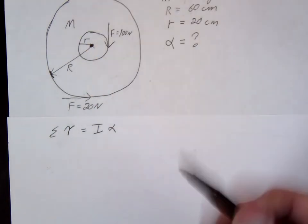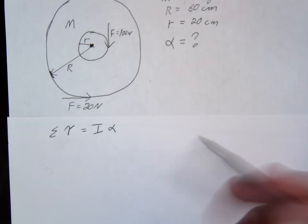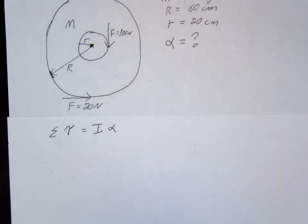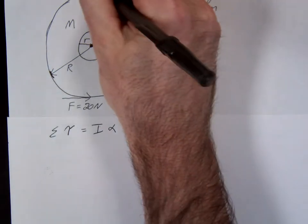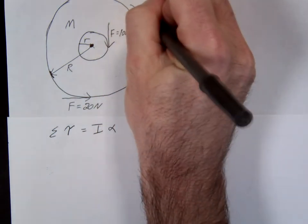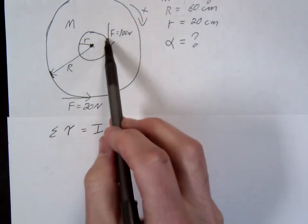If you defined counterclockwise as positive, you'll get a negative acceleration. It doesn't matter how you do it - it'll work out in the end. I'm defining positive acceleration to be the clockwise direction. So let's go ahead. We have two torques.